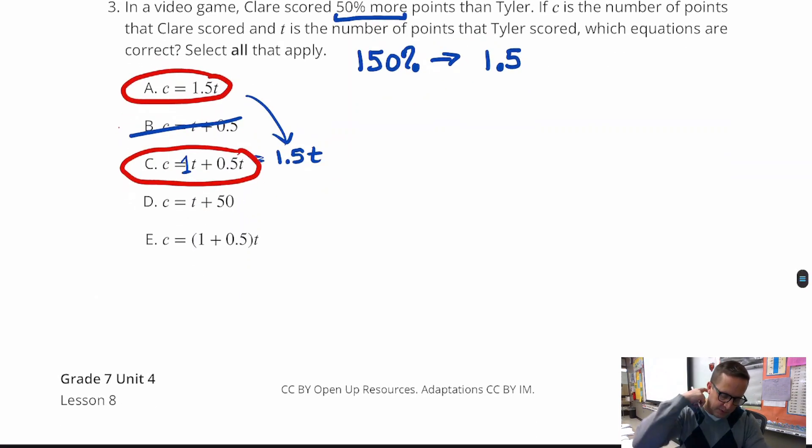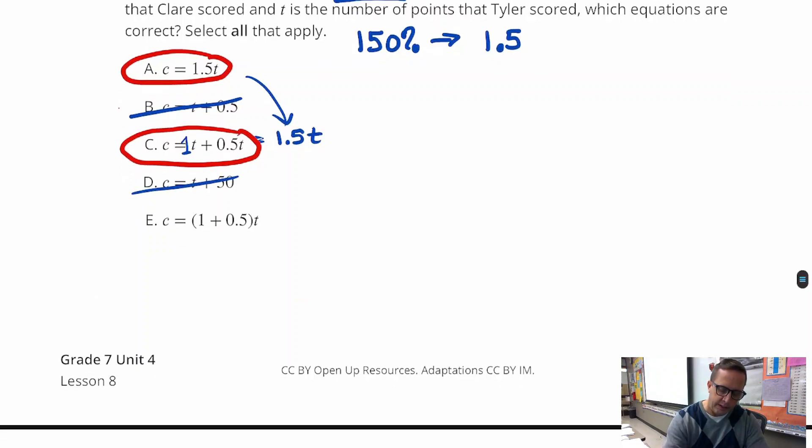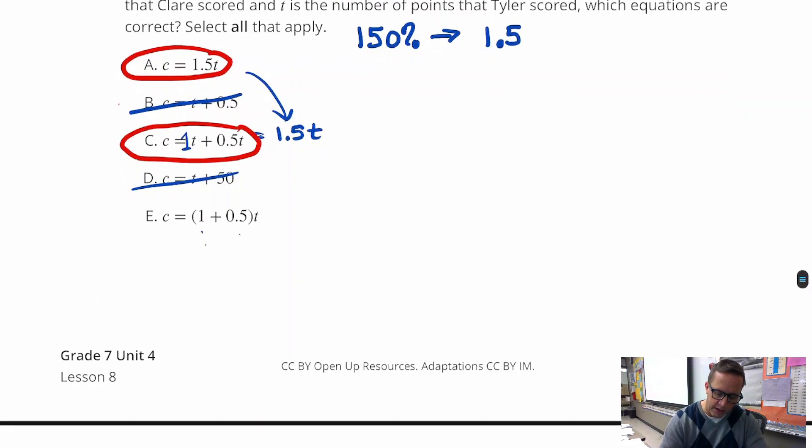D is kind of just like B. So we can count that one out. And then E, that one works too, because 1 plus 0.5 is 1.5 times T. So for that one, it was A, C, and E.